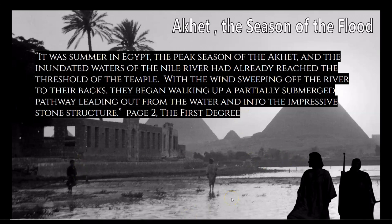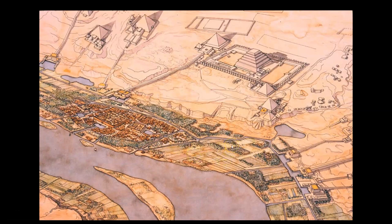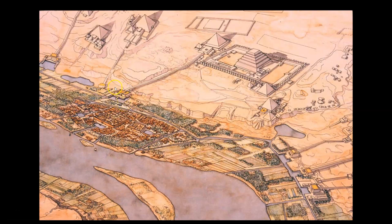The inundated waters of the Nile River had already reached the threshold of the temple. You can see here in this picture - taken before the construction of the High Aswan Dam - that even in modern times, the water level from the flooded Nile went all the way up to the threshold of the temple and almost reached the pyramids themselves. And here in this depiction of the ancient Harbor of Saqqara during the season of the Shamu, the harvesting season, you can see the farmlands surrounding the Nile and the Valley Temple at Saqqara with its harbor.